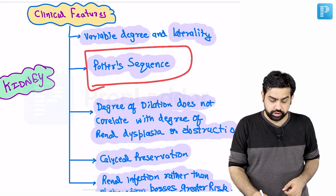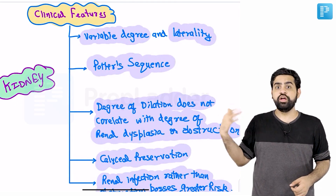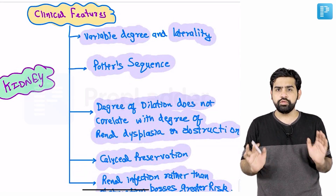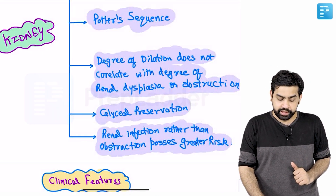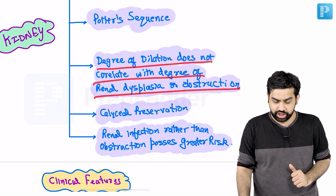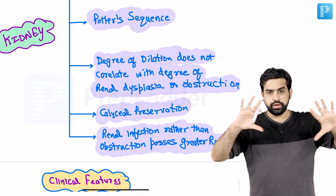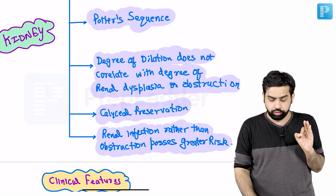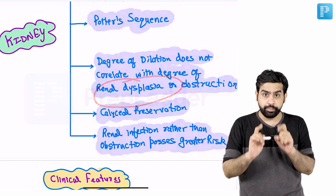Patients may develop Potter's sequence due to oligohydramnios, presenting with characteristic facial features. Importantly, the degree of hydronephrosis does not correlate with the degree of renal dysplasia or obstruction. Even if one patient has more hydronephrosis than another, it doesn't mean there is more obstruction or more renal dysgenesis. Please remember: hydronephrosis does not correlate with severity of obstruction or renal dysplasia.